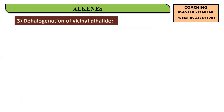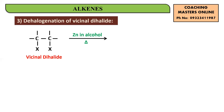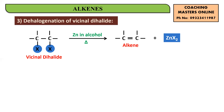The next topic is dehalogenation of vicinal dihalides. We are removing halogens — specifically from vicinal dihalides, meaning two halogen atoms attached on two different but adjacent carbon atoms. When you treat a vicinal dihalide with zinc in the presence of alcohol and heat, zinc combines with both the halogen atoms, giving ZnX₂. You are left with CH₂–CH₂, and because two halogens are removed, the single bond becomes a double bond — giving you a corresponding alkene.